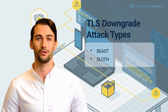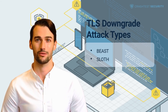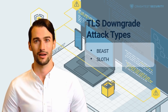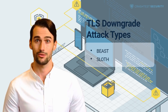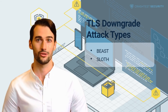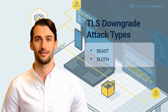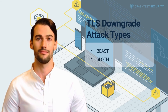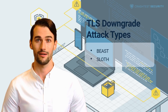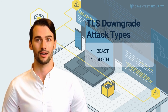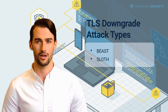SLOTH: Security Losses from Obsolete and Truncated Transcript Hashes is an attack that targets signature and hash algorithms, downgrading them to a weaker version. This allows attackers to capture traffic and decrypt it fairly easily. This attack can be launched against a client and a server independently or together, and like other attacks described above, it also relies on a man-in-the-middle for both the downgrade and the subsequent interference in the traffic.